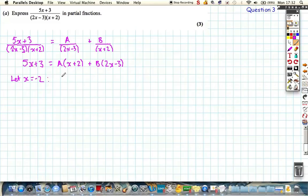So if we let x equal minus 2, 5 lots of minus 2 is minus 10, plus 3 is minus 7 is equal to B lots of, well, 2 lots of minus 2 is minus 4, minus 3 is minus 7. And B on the right hand side. That gives us a nice easy expression. B is 1.